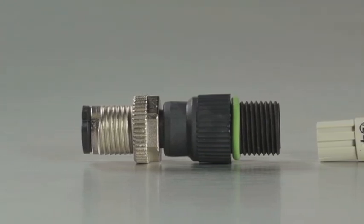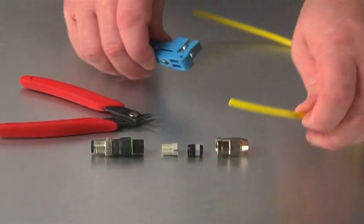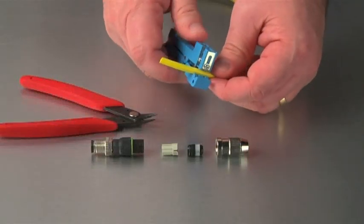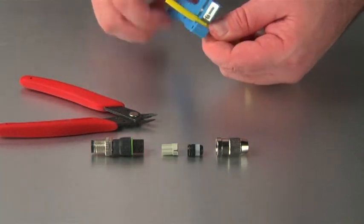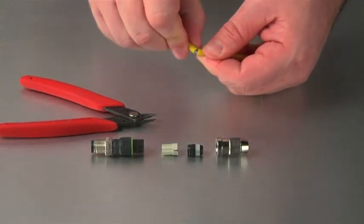Let's go through the steps to assemble an IDC. To begin, remove approximately 25 millimeters minimum of the outer cable jacket from the conductors. Leave the insulating cover on the inner conductors.